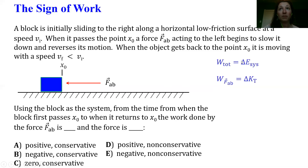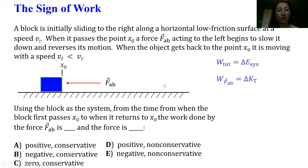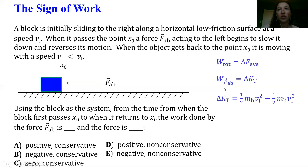In terms of what types of energy the block has, it only has energy associated with its center of mass motion. We're ignoring friction, which means we're ignoring any changes in thermal energy. This block could rotate, but it's not rotating, so it doesn't have a change in rotational kinetic energy. We haven't yet talked about potential energy or E-other, so those aren't things we need to worry about right now.